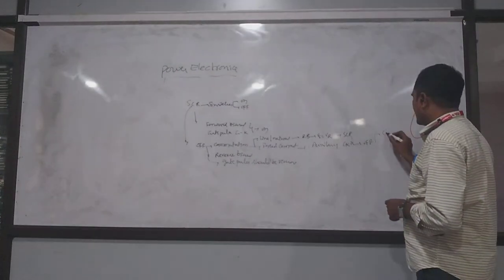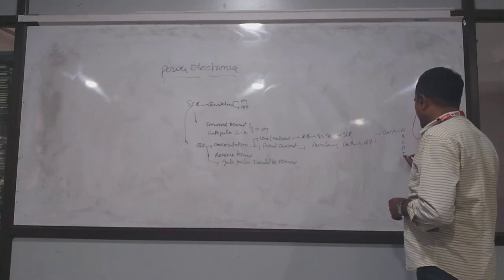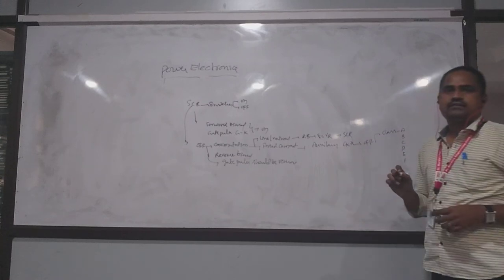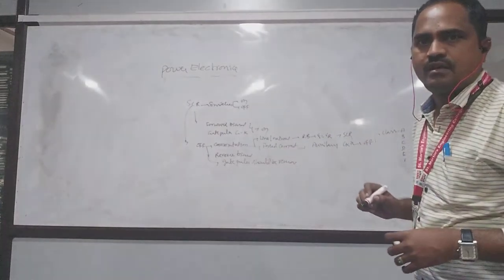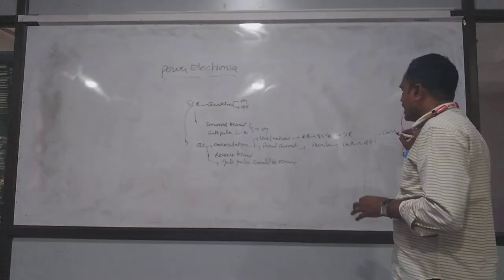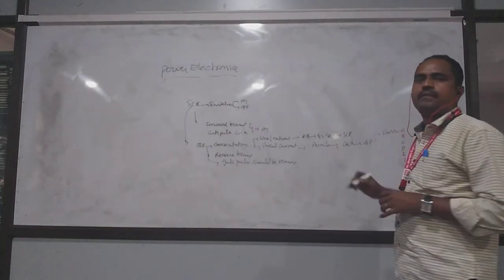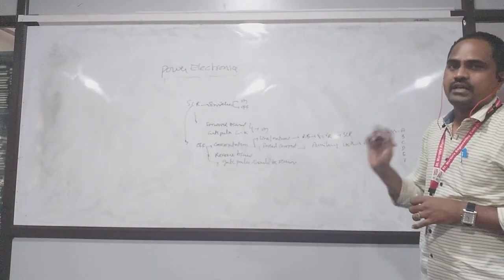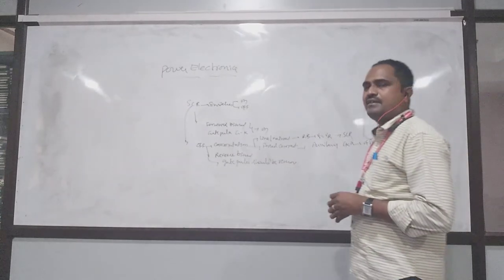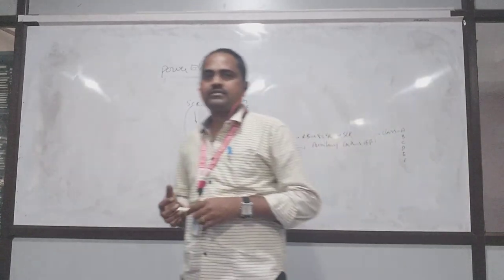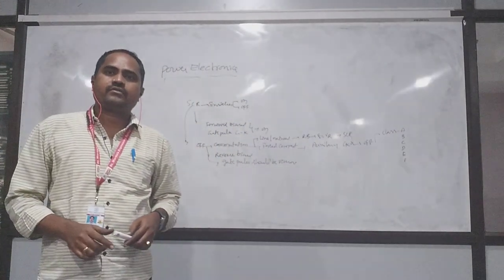In forced commutation, we forcibly turn OFF the device using some external auxiliary circuits. There is a classification: Class A, Class B, Class C, Class D, Class E, and Class F — these are the forced commutation circuits. By using these external circuits, we turn OFF the main SCR. In line commutation, there is no need of any external circuit to turn OFF the device.